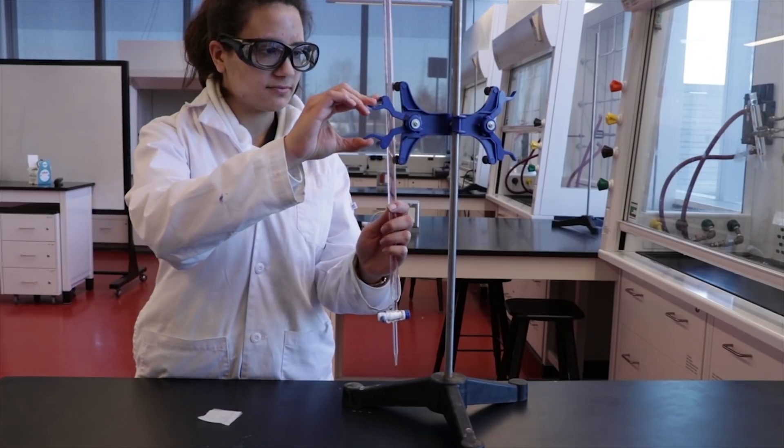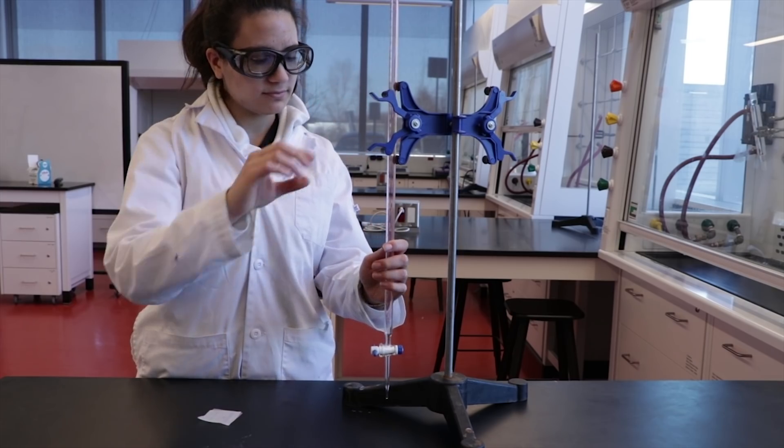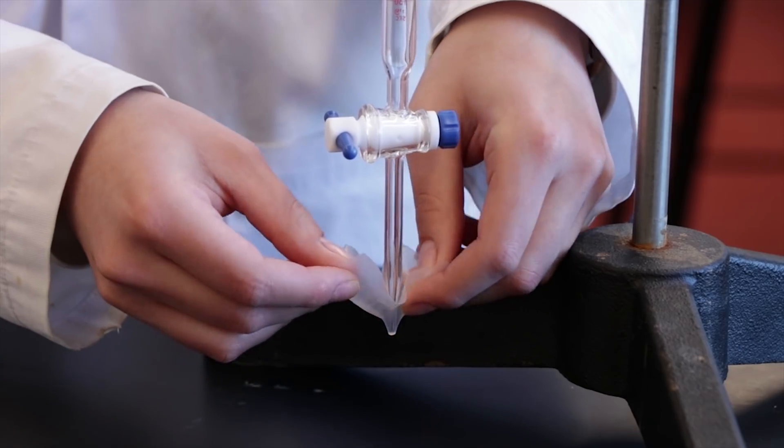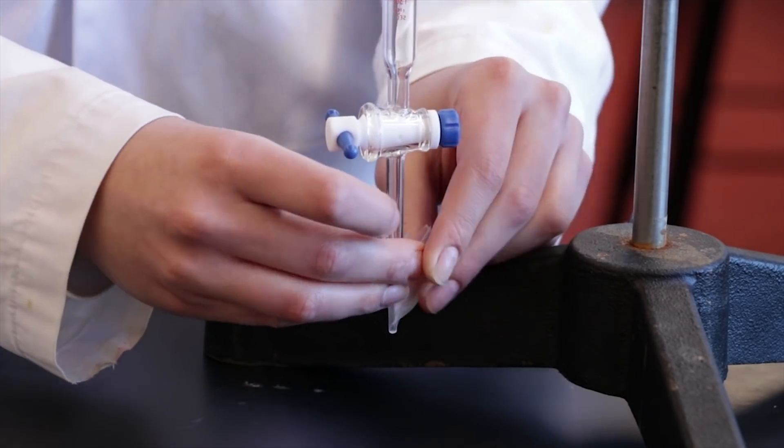First, securely clamp the burette into place using a butterfly clamp. Before the experiment, stretch and wrap a piece of parafilm on the tip of the burette to ensure that your burette is airtight.